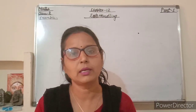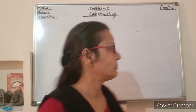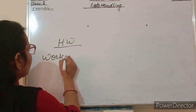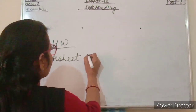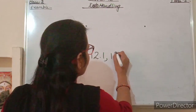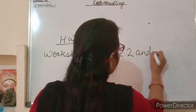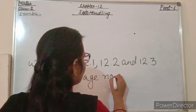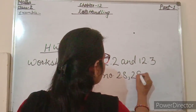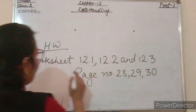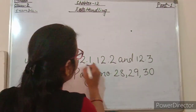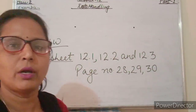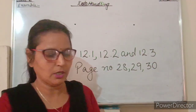Today I have taught you a collection of data. Now note down your homework: Worksheet 12.1, 12.2, and 12.3, page numbers 28, 29, and 30. Students, you have to do your homework in Application Book C.